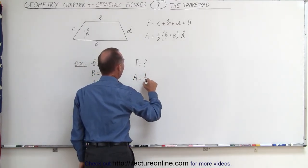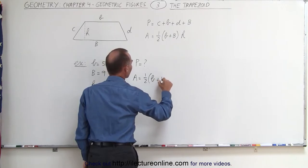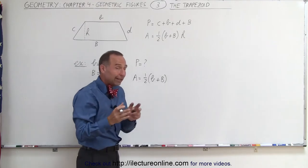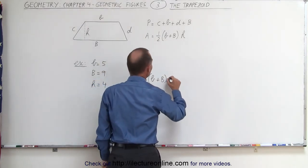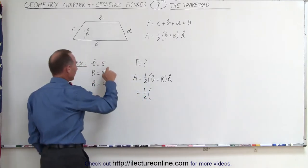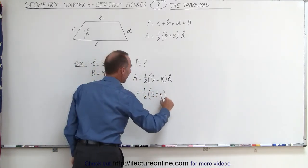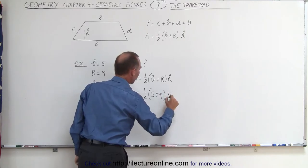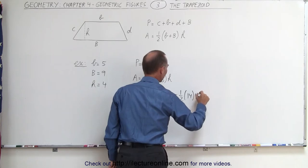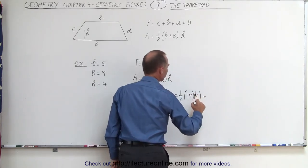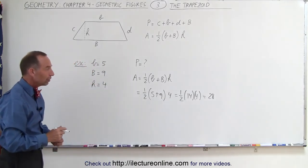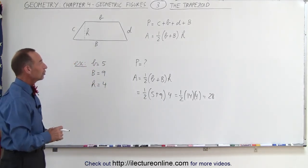We know that the area is equal to one half times the sum of the small and the large sides that are parallel to one another, times the height. So in this case it would be one half times five plus nine, multiplied times the height which is four. This becomes one half times 14 times 4, which is equal to 28. So that would be the area of the trapezoid in square units, whatever the units are.